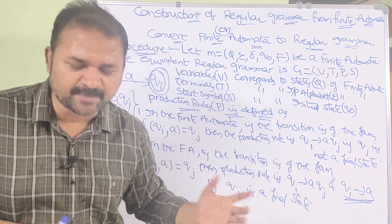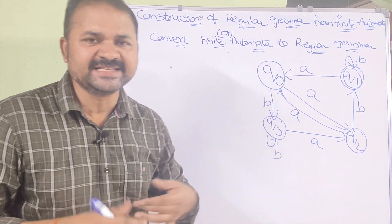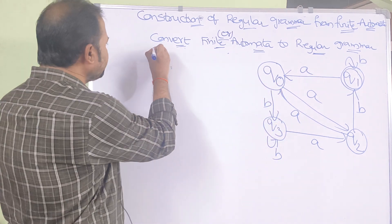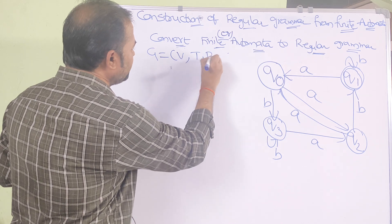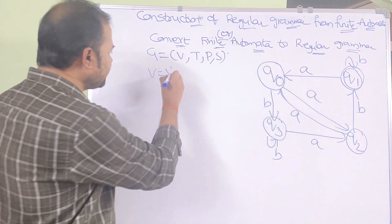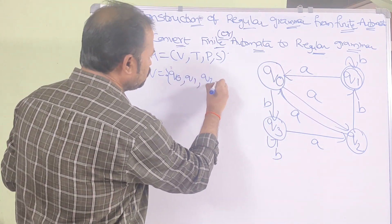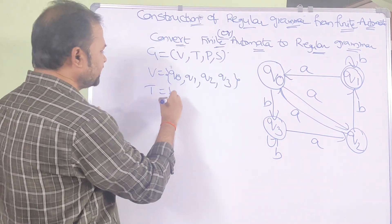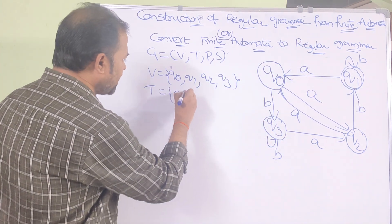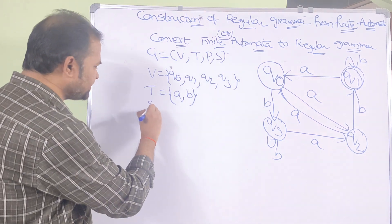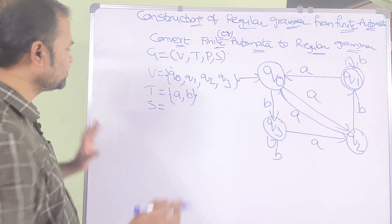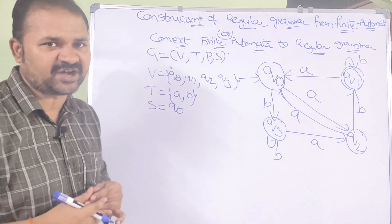Now let us see an example. A finite automata is given. For this finite automata we have to construct the equivalent regular grammar: G = (V, T, P, S). V (variables/states) = {q0, q1, q2, q3}. T (terminals/input alphabet symbols) = {a, b}. The starting symbol is q0, since q0 is the initial state.